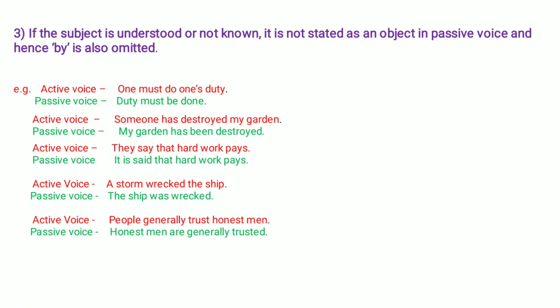Next example: 'A storm wrecked the ship.' The passive is: 'The ship was wrecked by the storm.' There is no need to write it if the agent is obvious, so it can be omitted. Last example: 'People generally trust honest men.' 'People' is the subject, 'trust' is the verb, and 'honest men' is the object. The passive voice is: 'Honest men are generally trusted.' 'By people' is not necessary and is omitted.